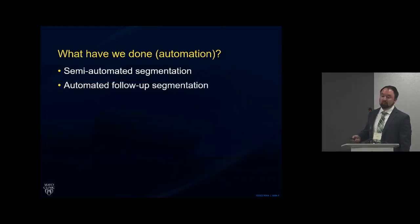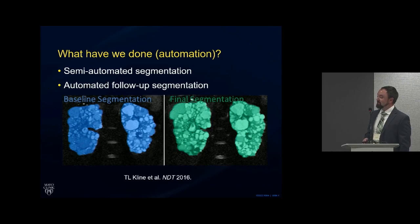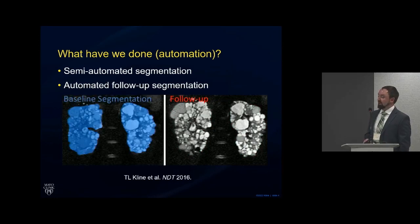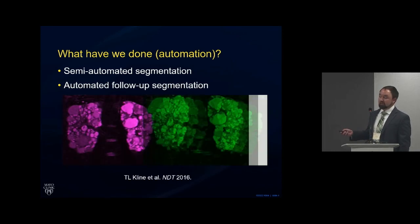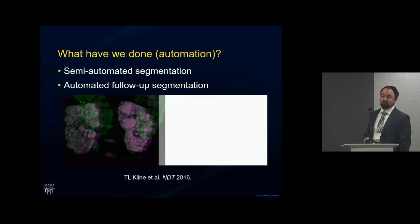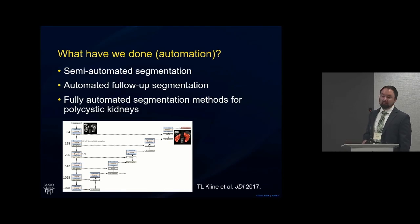The next thing we worked on was automating follow-up segmentation. If a patient has already come in for an exam and had a segmentation performed, how can we automatically track changes that occurred? The idea was to align the follow-up scan to the prior exam and propagate that segmentation onto the follow-up examination. This allowed us to automatically capture total kidney volume at follow-up and track changes. This also helped us develop a large dataset of imaging and reference standard segmentations for a fully automated convolutional neural network segmentation model, which we published back in 2017.